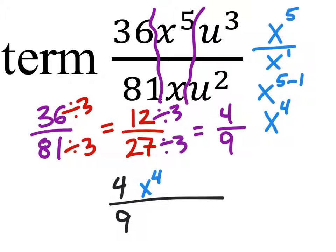And the u's. We have u to the power of 3 over u to the power of 2. So that's really u to the power of 3 minus 2, which is u to the power of 1. You don't have to show that power of 1 on the test, but if you want to, you can.